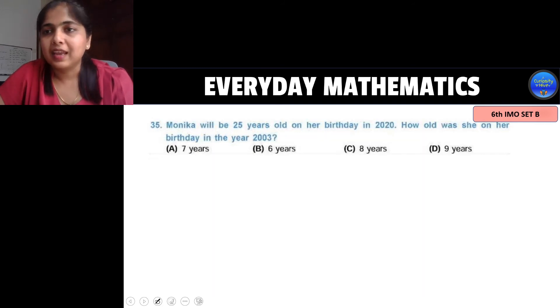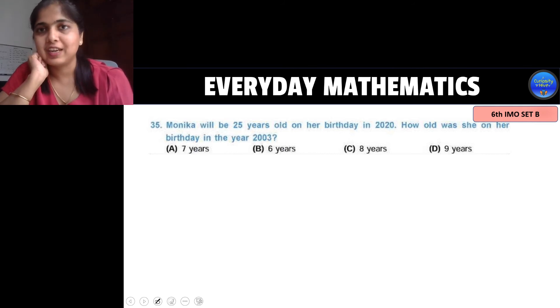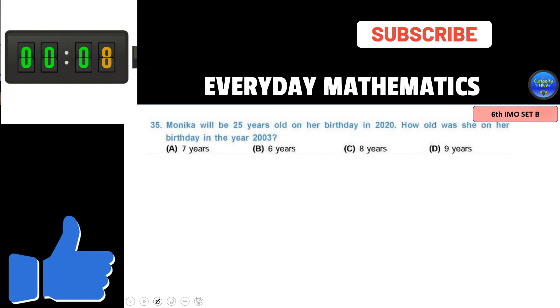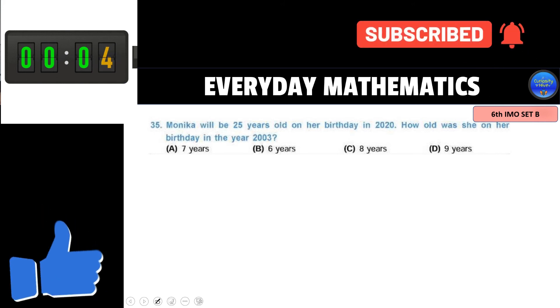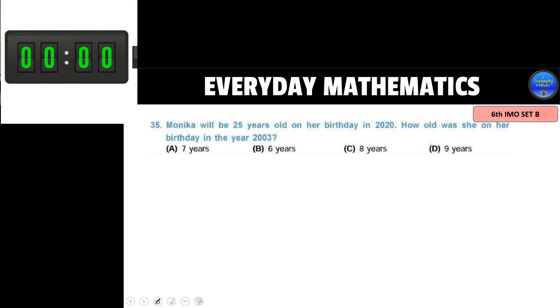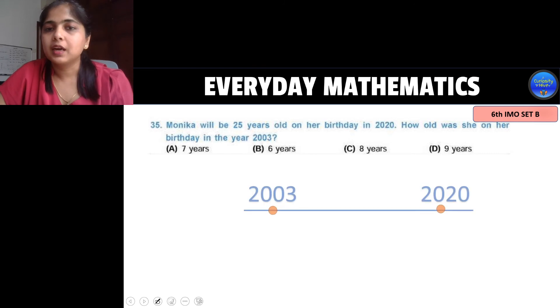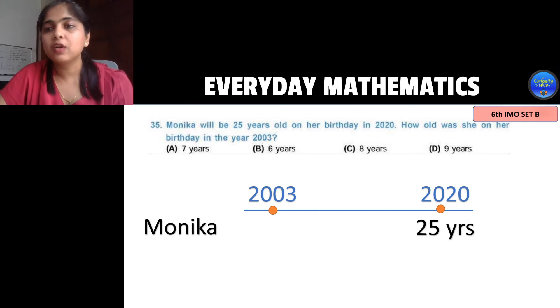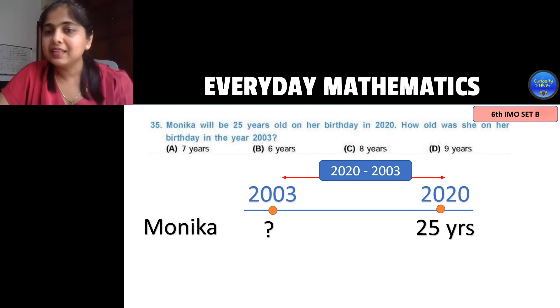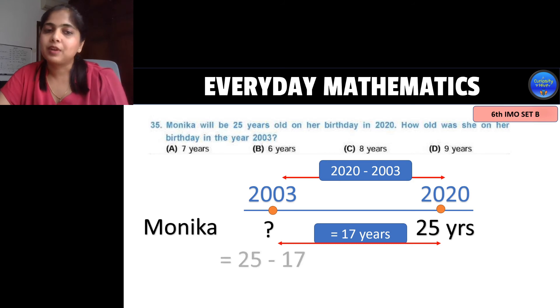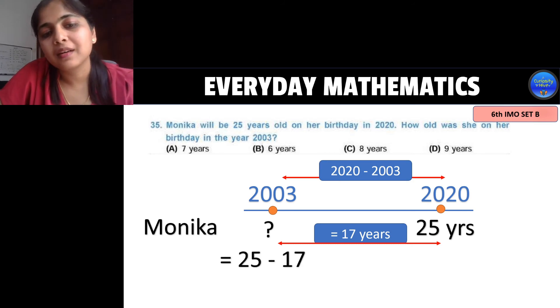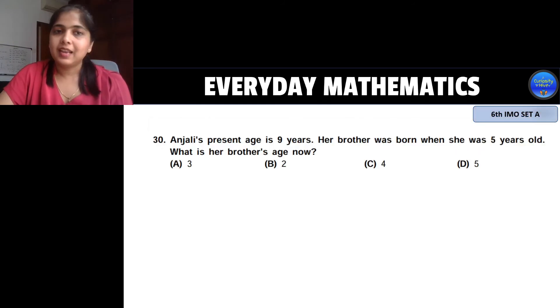Next question. Again it is a timeline question. Read carefully and choose your right answer. Well here the two important years are 2020 and 2003. So they have said that Monica will be 25 years old on her birthday in 2020. How old was she on her birthday in 2003? So we need to find her age in 2003. So first we should find the difference between 2020 and 2003 and then subtracted from her current age. That is we subtract 25 minus 17 to get her age in 2003 which will be 8 years.